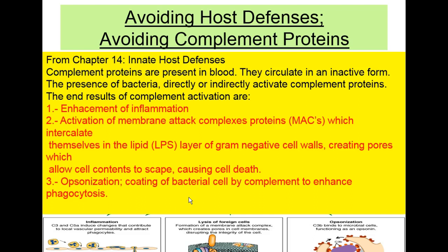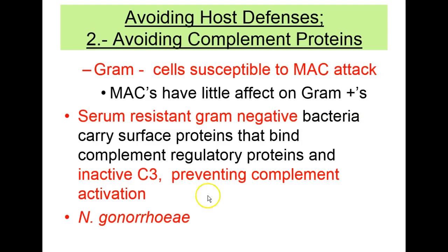Bacteria that try to colonize our bodies will have to avoid complement proteins in order to prevent destruction. Gram-negative cells are more susceptible to membrane attack complexes and complement proteins. MACs have little effect on gram-positives. Some gram-negative organisms have developed the ability to prevent activation of C3 complement, and with that, they prevent activating the complement cascade.